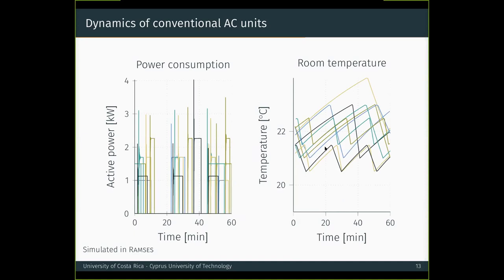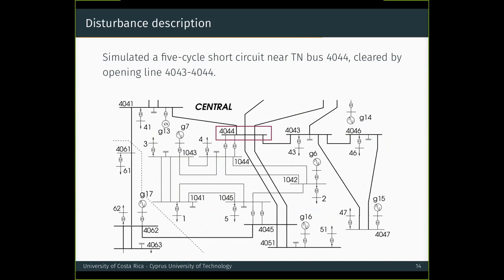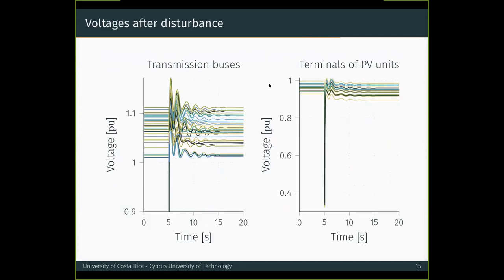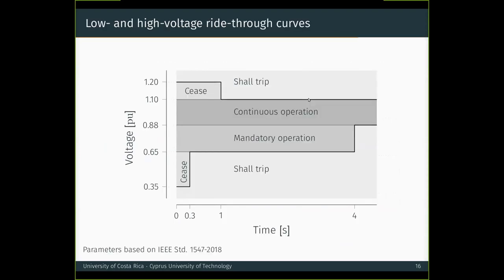Then, in order to test the response of the PV units, we simulated a five-cycle short circuit near transmission bus 4044, cleared by opening line 4043 and 4044. On the left, we show the transmission voltages and see that this was not a disturbance that led to instability. And on the right, and most importantly, we see the terminal voltages of the PV units. Since we are modeling the low voltage networks, we can capture the spreading of those terminal voltages, both before and after the disturbance. To understand the response of the PV units, we need to know the parameters of the low and high voltage ride-through curves. When the voltage exits the region of continuous operation, the units are allowed to cease to energize for 0.3 seconds and then they are required to inject power up to four seconds after the disturbance.